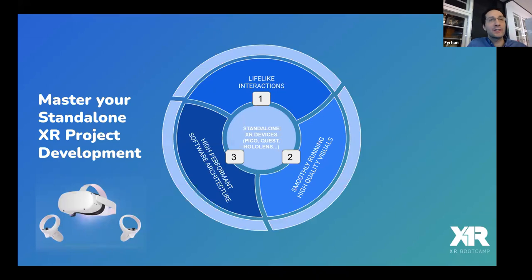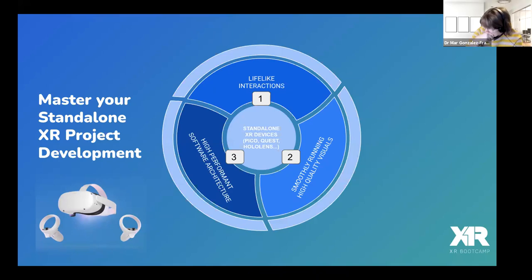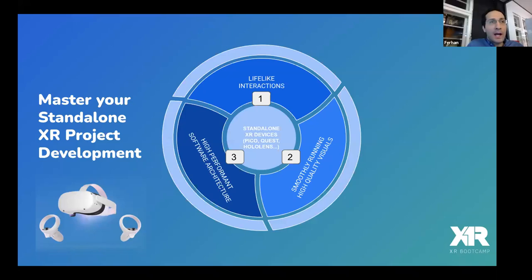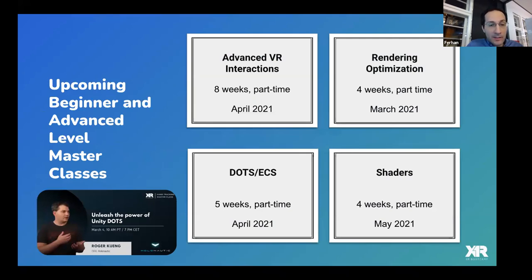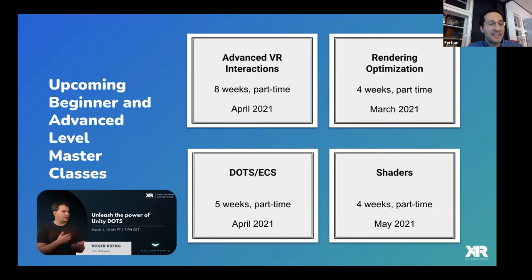Locomotion is one part of those challenges. The three main pillars we address are: lifelike interactions using different input techniques, smooth running visuals — especially since you're working on limited hardware where optimization is critical — and creating a performant code base and infrastructure. Based on these three pillars we're creating different masterclasses: advanced VR interactions, rendering optimization, DOTS ECS, and shaders. Most are being launched in the upcoming months. Advanced VR interactions is delivered by Roger and Dennis and includes holographic UI, inverse kinematics, physics-based interactions, hand tracking, and locomotion.